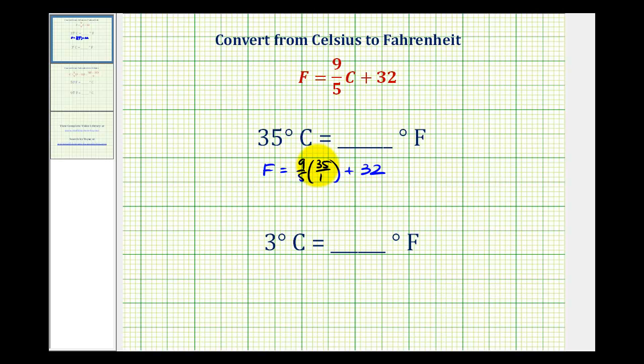And then 9 fifths times 35 over one simplifies, so a common factor of five here. There's one five in five, and seven fives in 35.